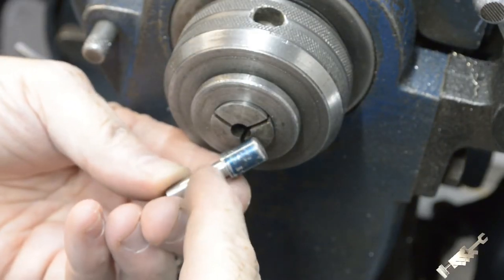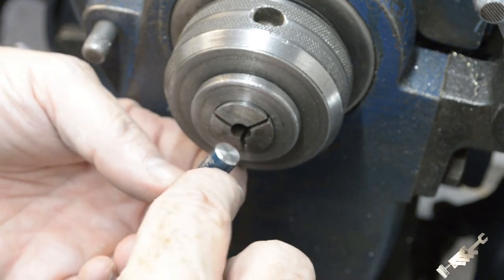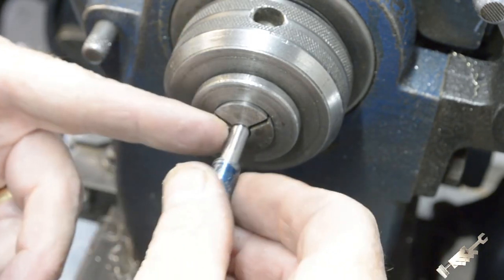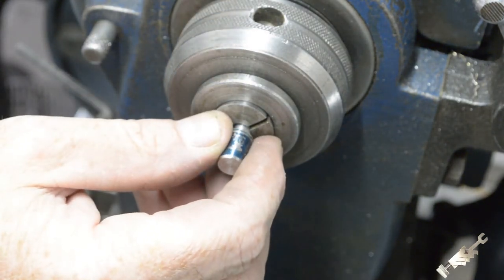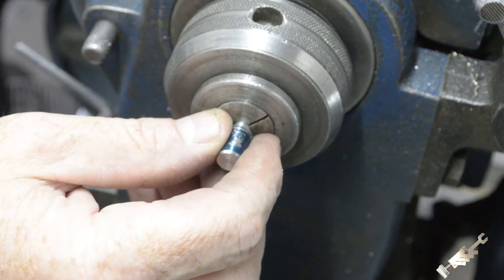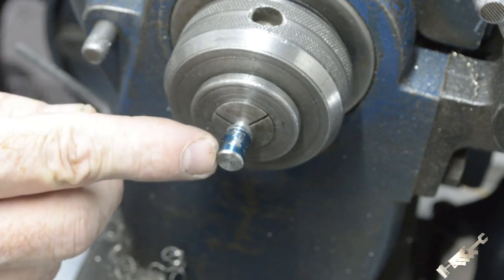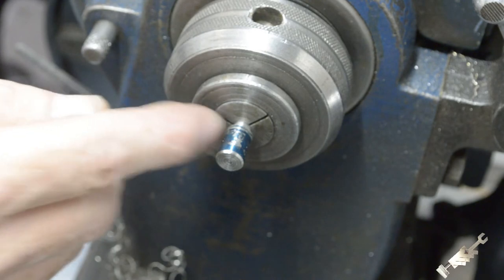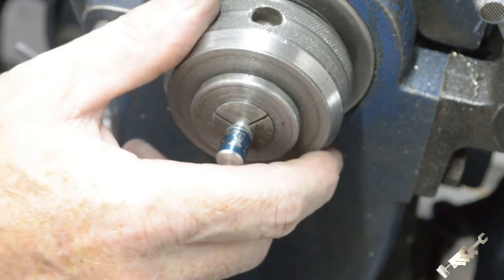Okay, so I got this turned down to a quarter inch diameter. This is 3 eighths, the original diameter of the stock, and I'm just going to put it in a quarter inch collet now and hold it, and I'll put the 3 eighths by 24 threads per inch thread on here, and I'll be able to thread right across. I won't have to worry about any relief in there because it's already turned down.